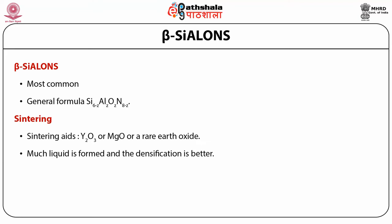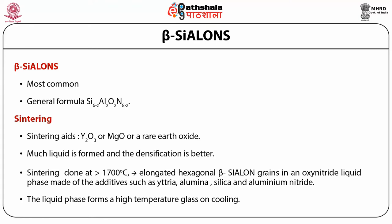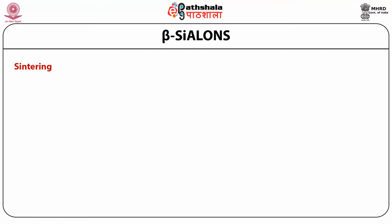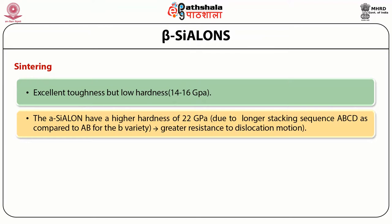On sintering above 1700°C, elongated hexagonal beta Sialon grains grow in an oxynitride liquid phase made up of additives such as yttria, alumina, silica and aluminium nitride. The liquid phase forms a high temperature glass on cooling. Beta Sialons have excellent toughness but their hardness of 14 to 16 GPa is low. Alpha Sialons have a higher hardness of 22 GPa due to their longer stacking sequence ABCD as compared to AB for the beta variety, providing high resistance to dislocation motion.